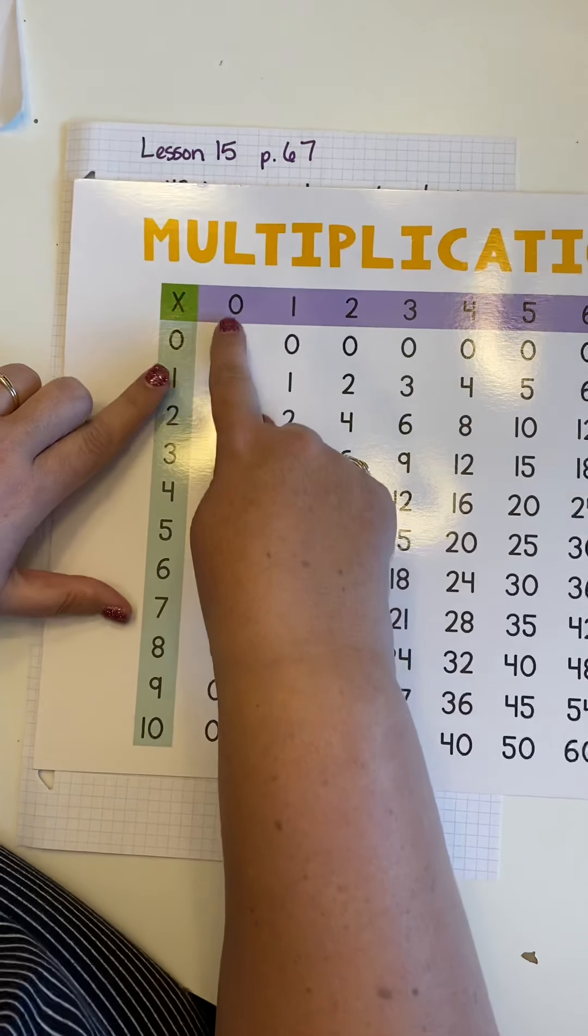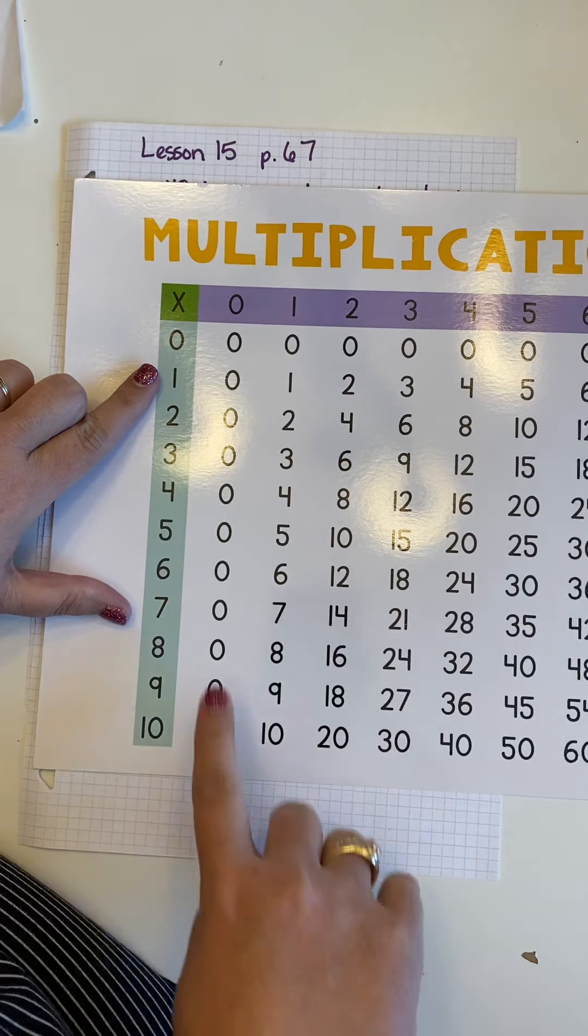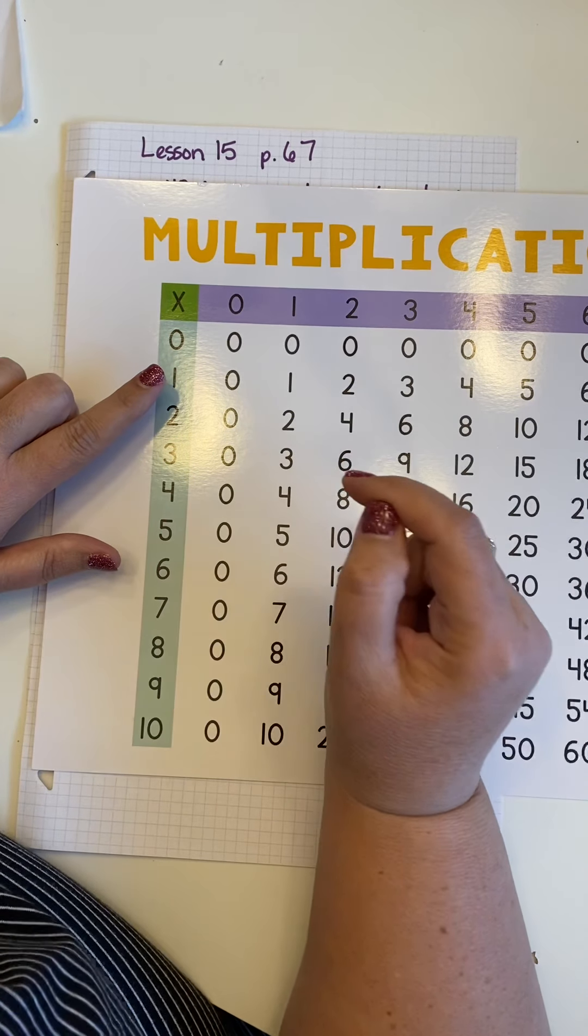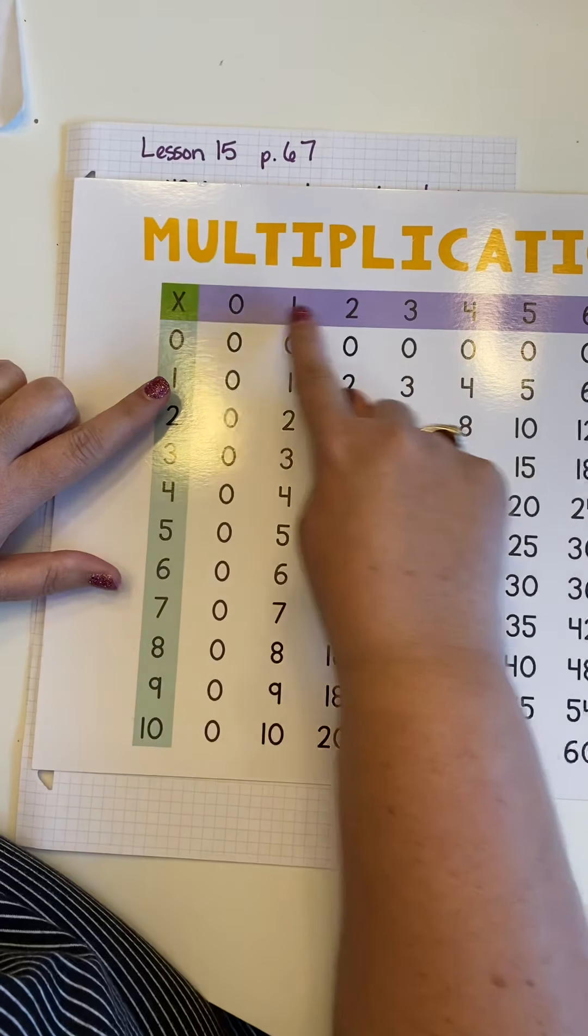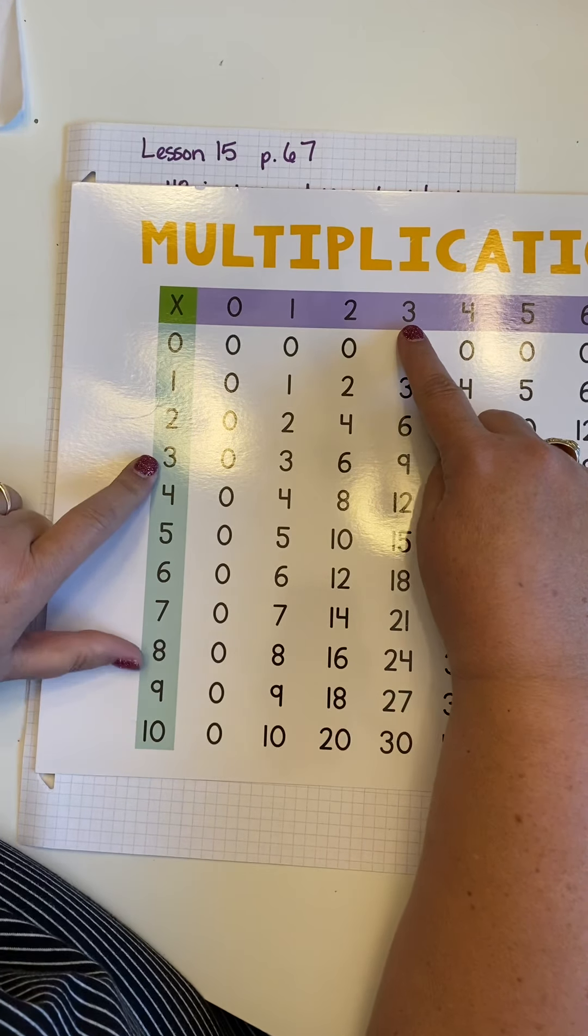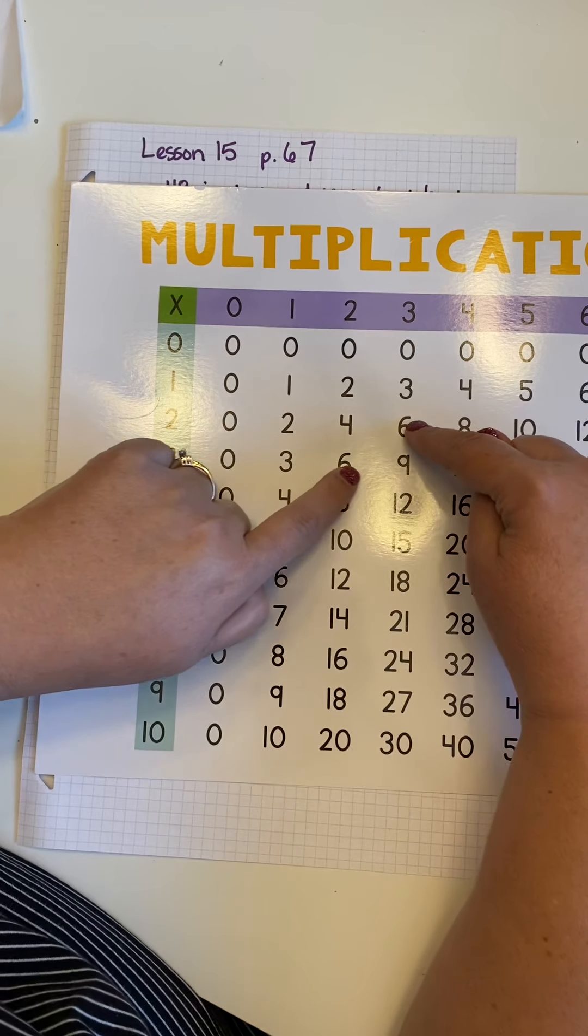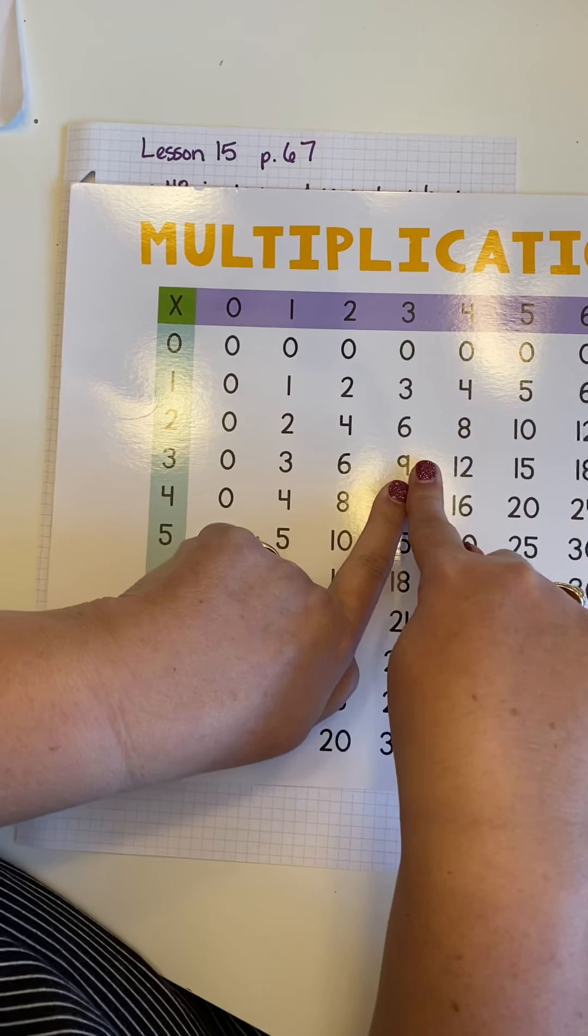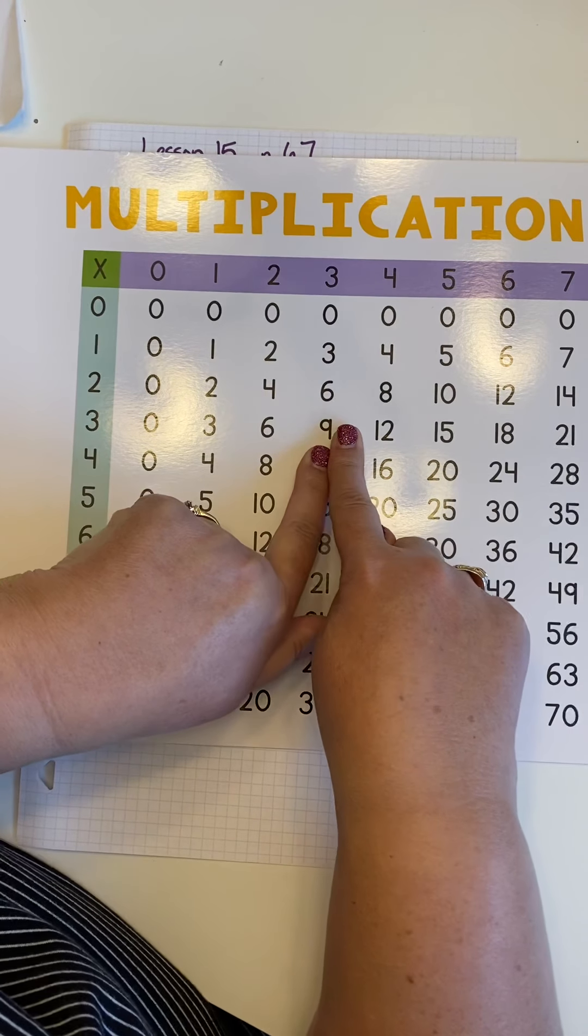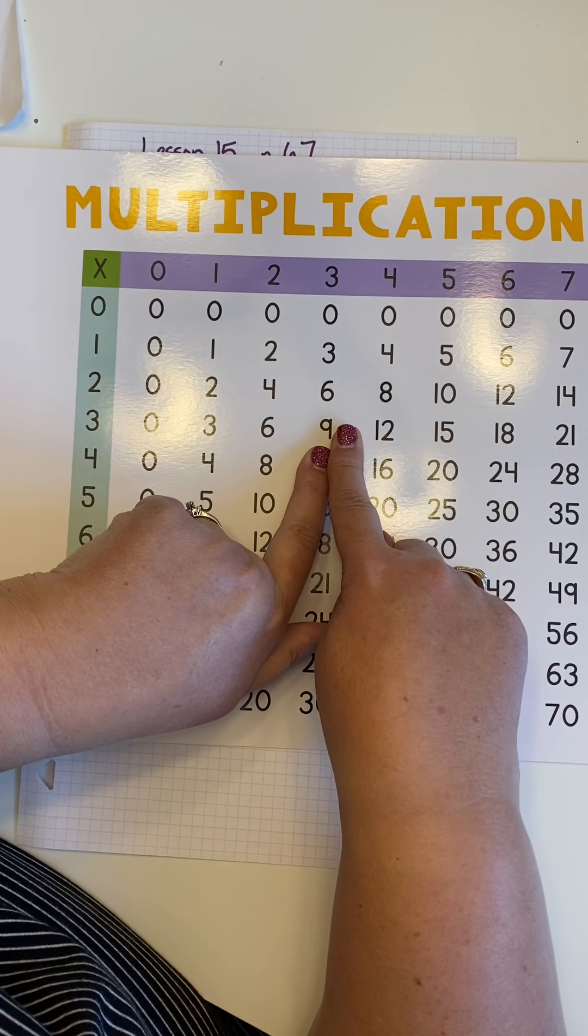So you have, you see your rows of zeros, all the different things. When you use a multiplication table, if I wanted to find out what three times three was, I'd come across the top to three, I'd come down this column to three, and then I'd pull my fingers together, and then when they meet on nine, that is the answer to three times three.